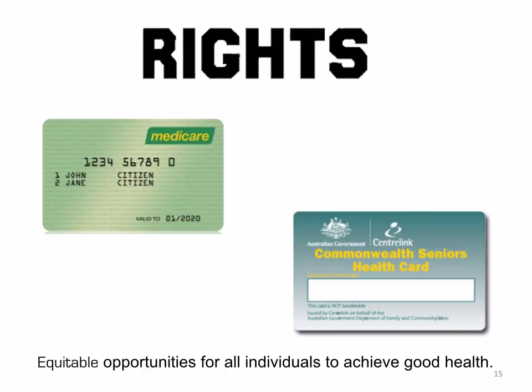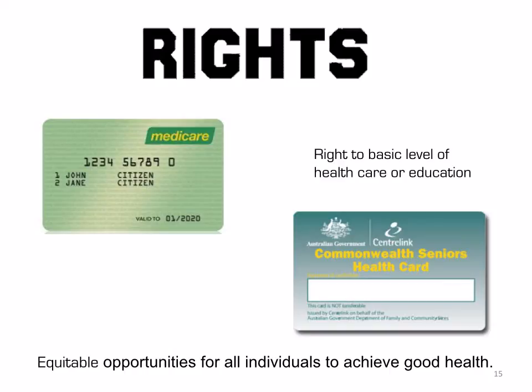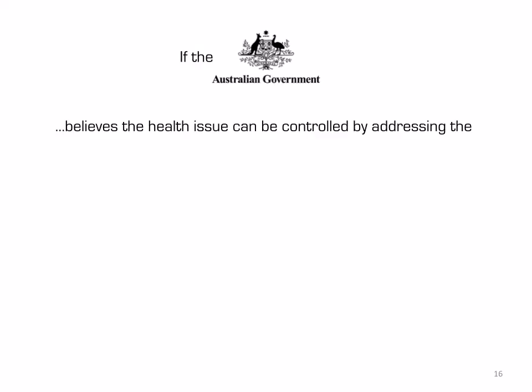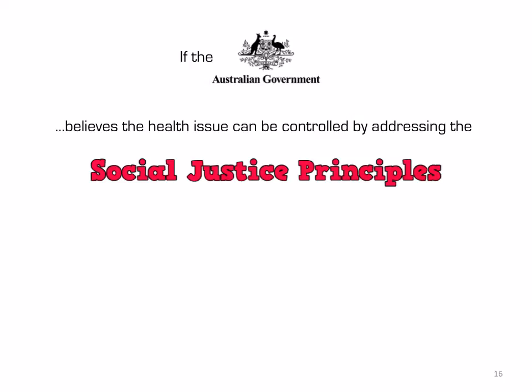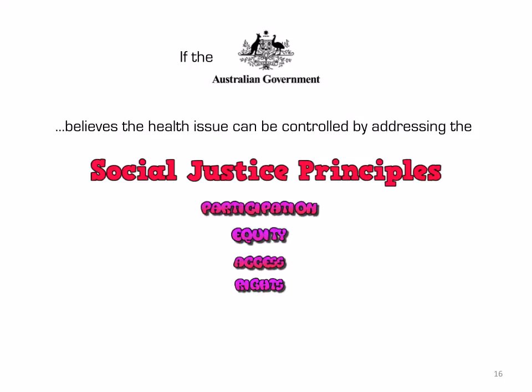Rights is the fourth social justice principle — an entitlement to healthcare or basic education. Medicare provides that right, as every person has the right to access their local GP. There is also a Commonwealth Seniors Health Card, which allows more access for the elderly community. If the Australian government believes that a health issue can be controlled by addressing the social justice principles of participation, equity, access, and rights, then the issue will be made a priority.